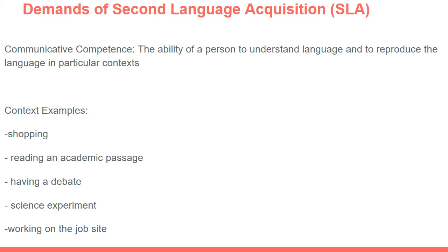It's also important to note the concept of communicative competence — the ability of a person to understand language and reproduce it in particular contexts. People are able to use language to effectively communicate and interchange messages. Communicative competence, in layman's terms, means the ability for a person to communicate with other people effectively — to listen and understand what is being said, and also make comprehensible speech that relays the intended message.